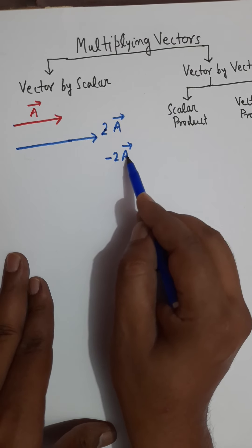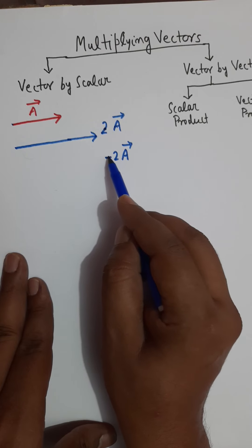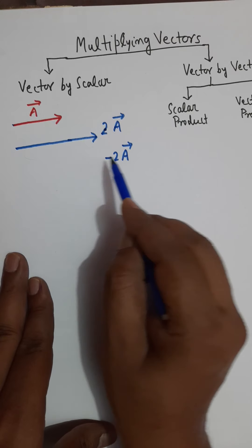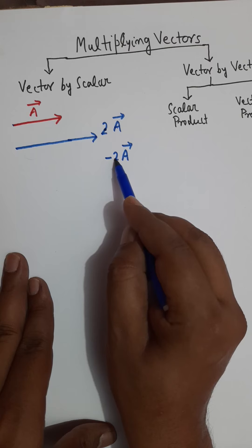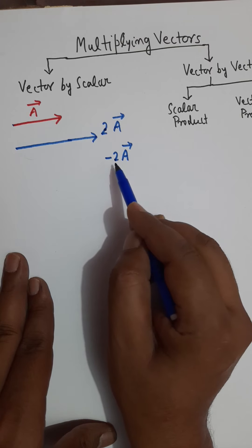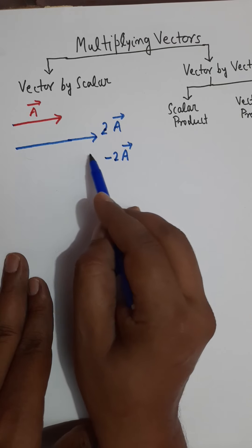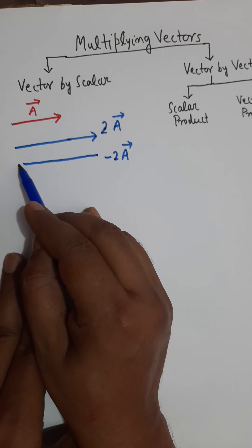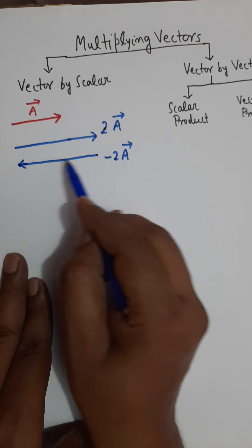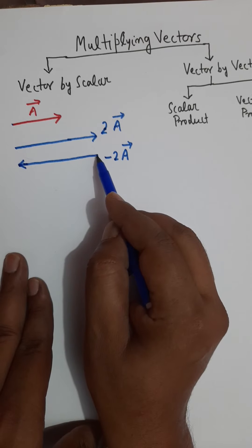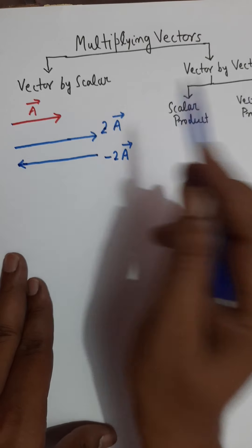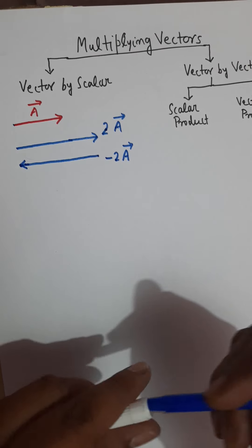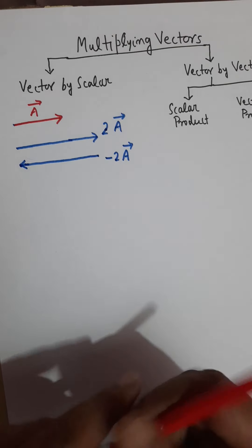If you multiply vector A by minus 2 — a negative number — because of the 2 the length of the arrow is doubled, and because of the negative sign the arrow is flipped by 180 degrees, meaning the new vector is opposite to original vector A. This is vector-by-scalar multiplication shown geometrically.